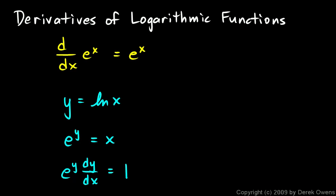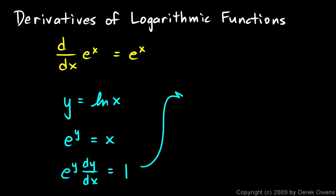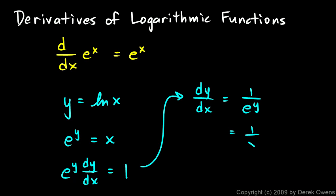My goal is to find the derivative of the natural log function, so I'm looking for dy/dx. Solving algebraically for dy/dx gives me one over e to the y. And since e to the y equals x, I can write it as one over x — so dy/dx equals one over x.